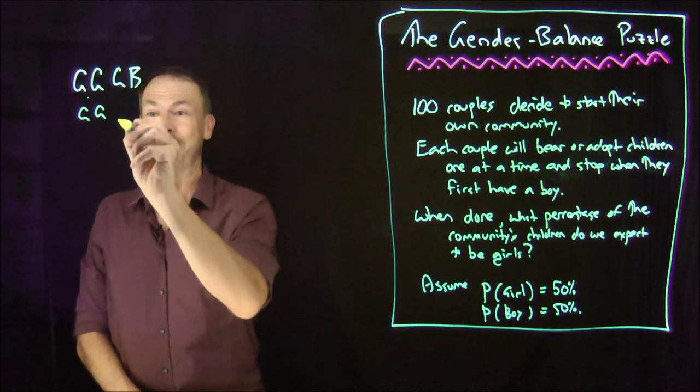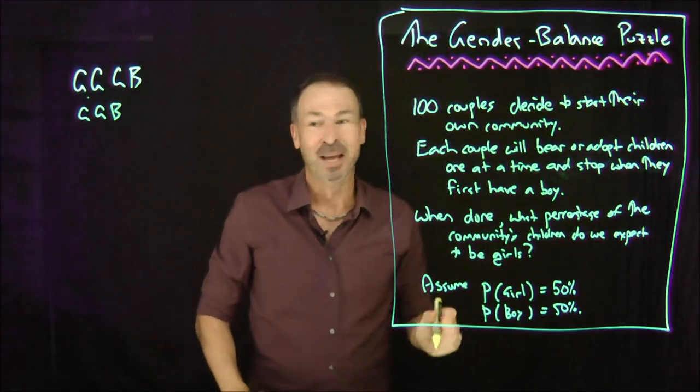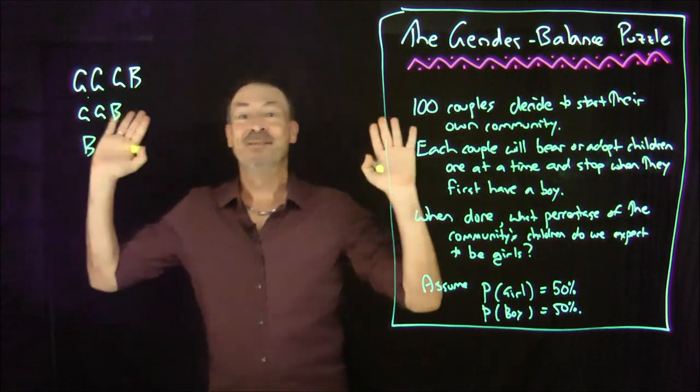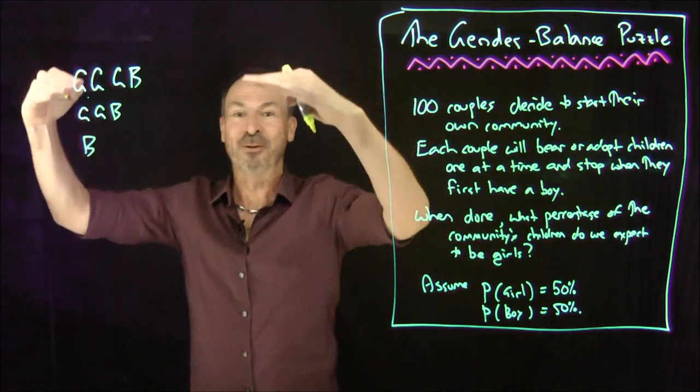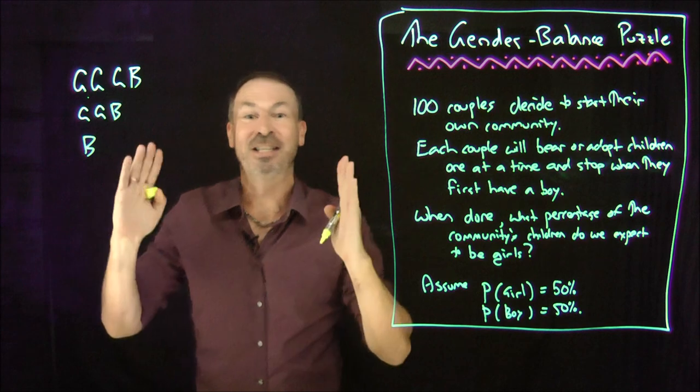A second couple might have a girl, grand, then a girl, fabulous, and then a boy, wonderful, but they'll stop there. A third couple might have just a boy right away, they'll stop. So 100 couples will do this, keep bearing or adopting children until they have a boy.